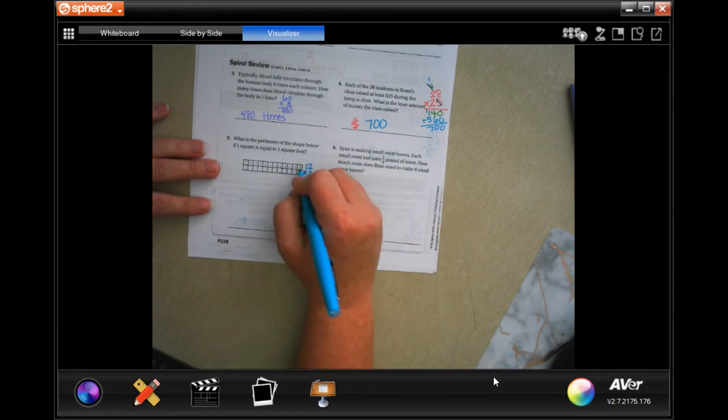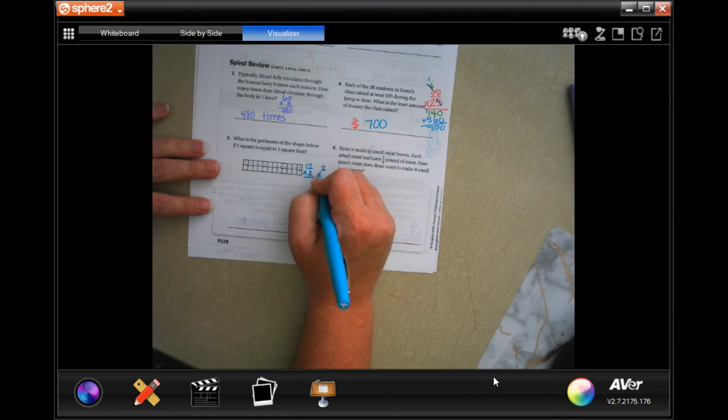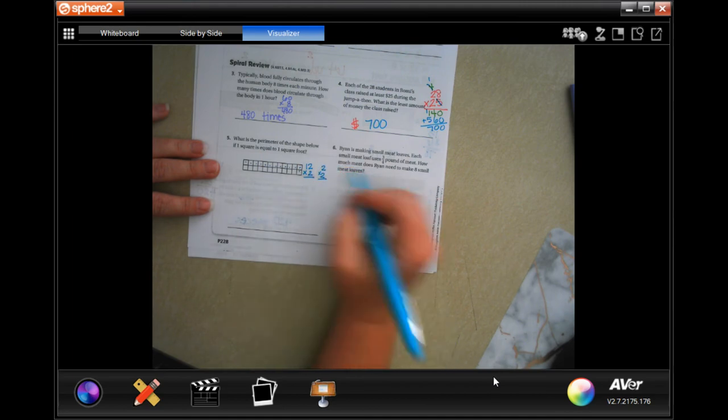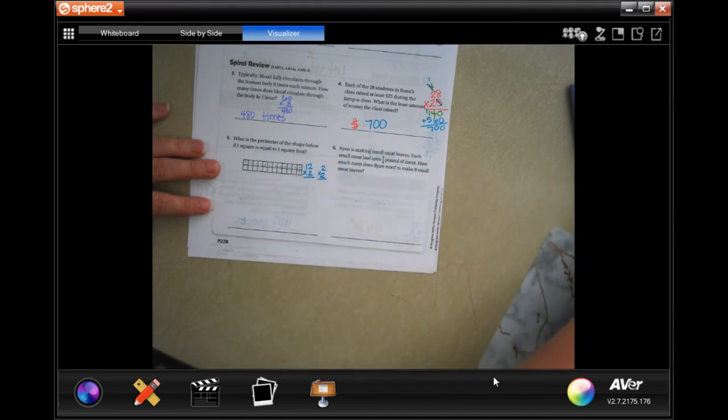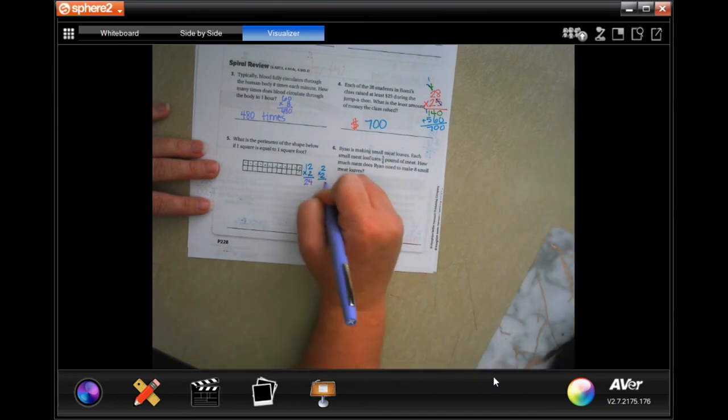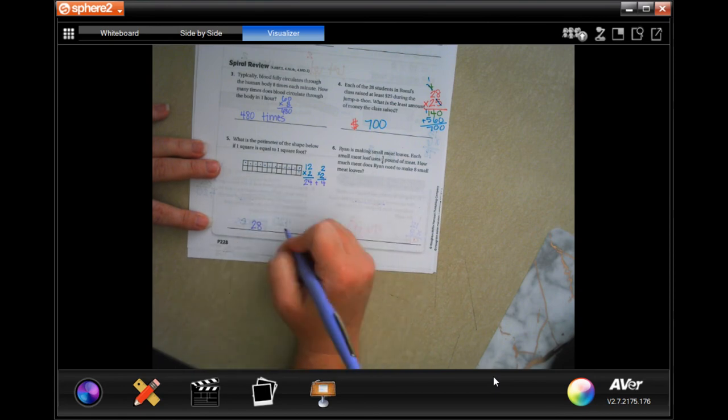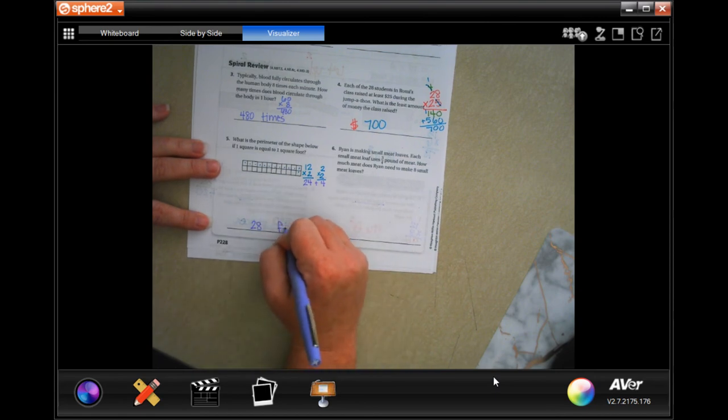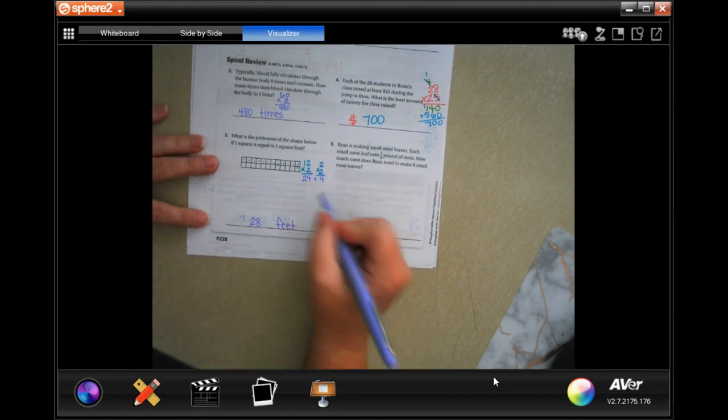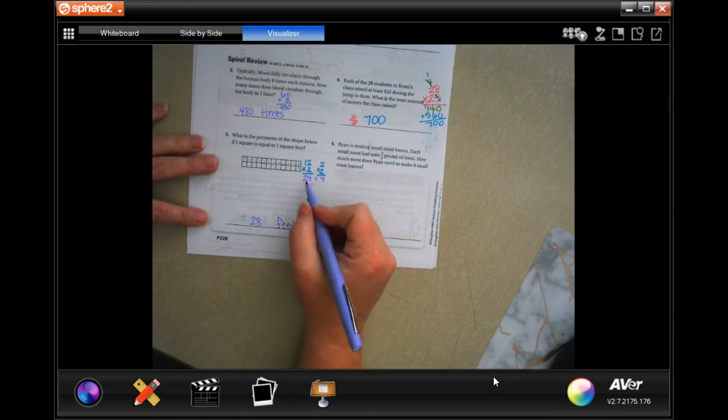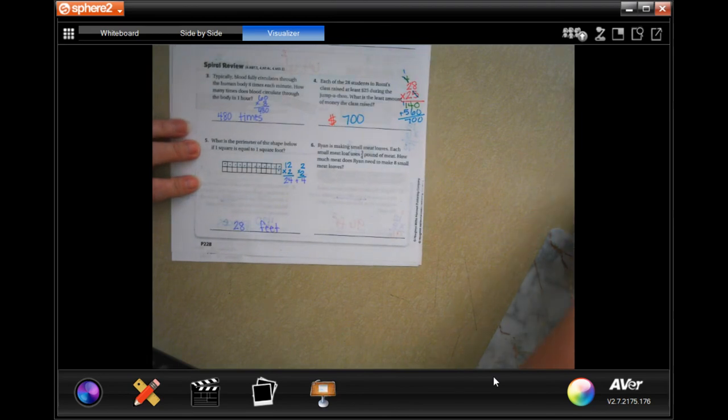And then we have one, two. And we have two of those. Okay. So, we're going to add those up when we're done. Okay. So, we're going to have 24. And we're going to have four. When you add those up, you get 28 feet. Remember, we're not doing area. So, we're not multiplying feet by feet. We're just adding them.